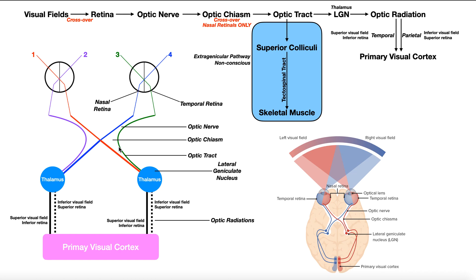Those optic tracts project back to the thalamus. There are two hemispheres of the thalamus — a left and a right — though technically they are together, not separate. Specifically, the optic tracts project into a cluster of cell bodies in the thalamus called the lateral geniculate nucleus, or LGN. The left lateral geniculate nucleus receives input from the left optic tract, and the right lateral geniculate nucleus receives input from the right optic tract.